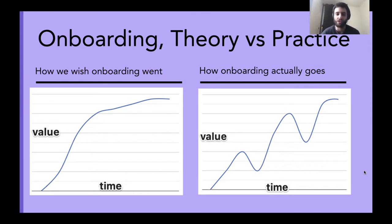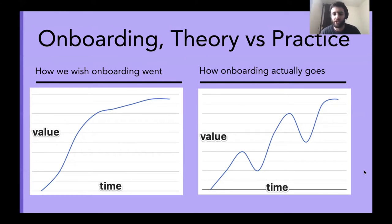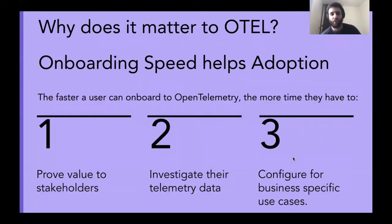But in practice, there are peaks and valleys. You invest a little bit of time, you get things working, but then you hit an unusual situation where things break, or the data isn't exactly how you want it. You invest more time, gain more value, and then something else goes wrong. Each of those valleys in the graph on the right is an opportunity where the user might churn, or might just throw up their hands and say, "I'll just stick with what works for me." And so for OpenTelemetry, we want to limit those situations.